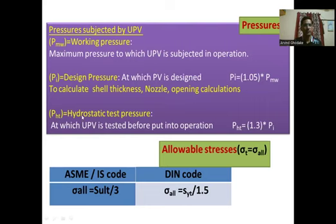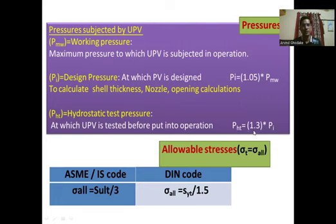Next is the hydrostatic test pressure — the pressure at which the unfired pressure vessel is tested before being put into operation. It is denoted by PHT and is given as 1.3 times the internal or design pressure: PHT = 1.3 × PI.